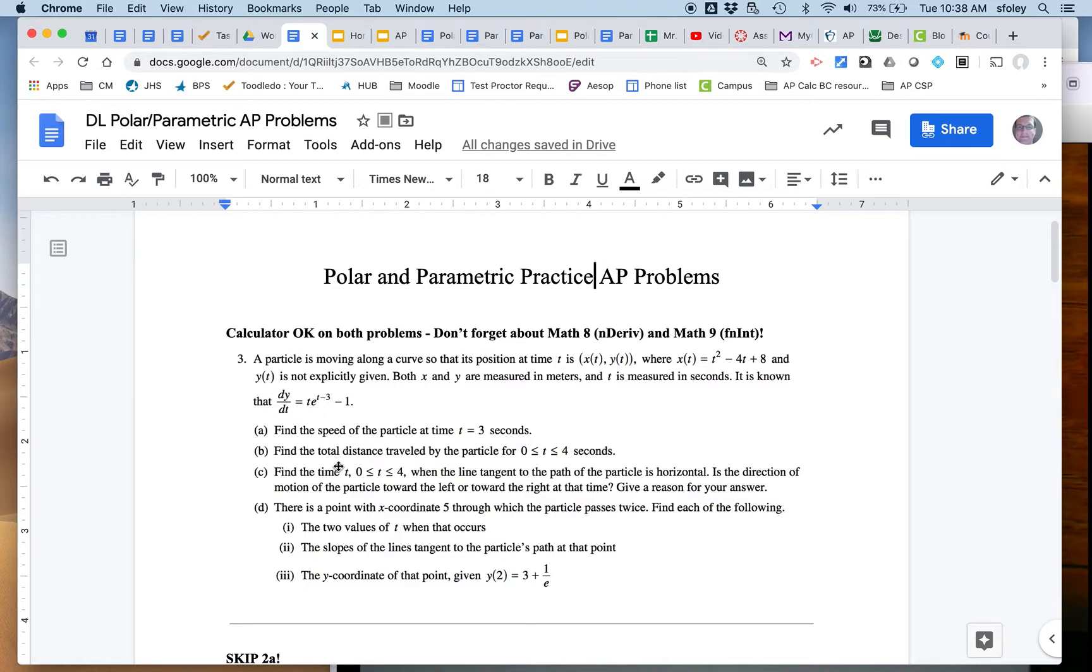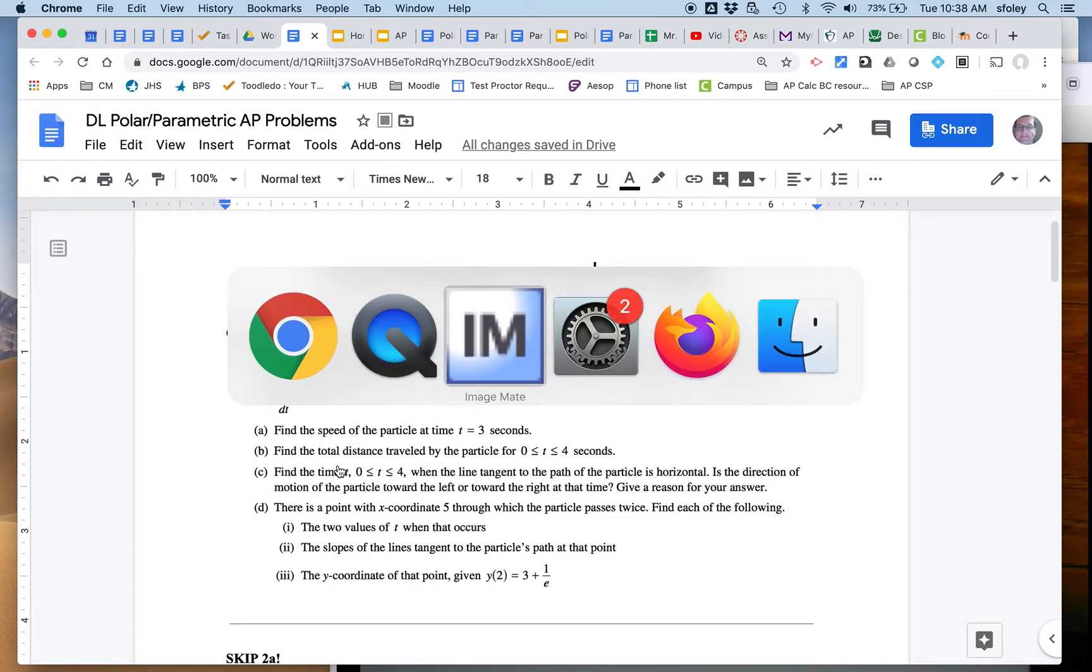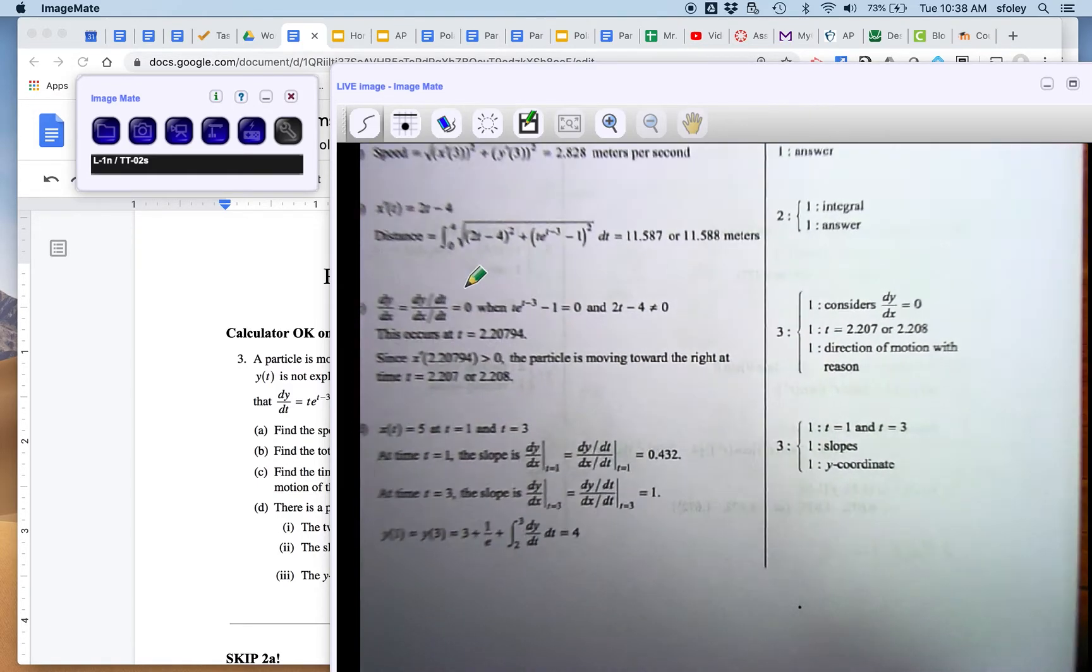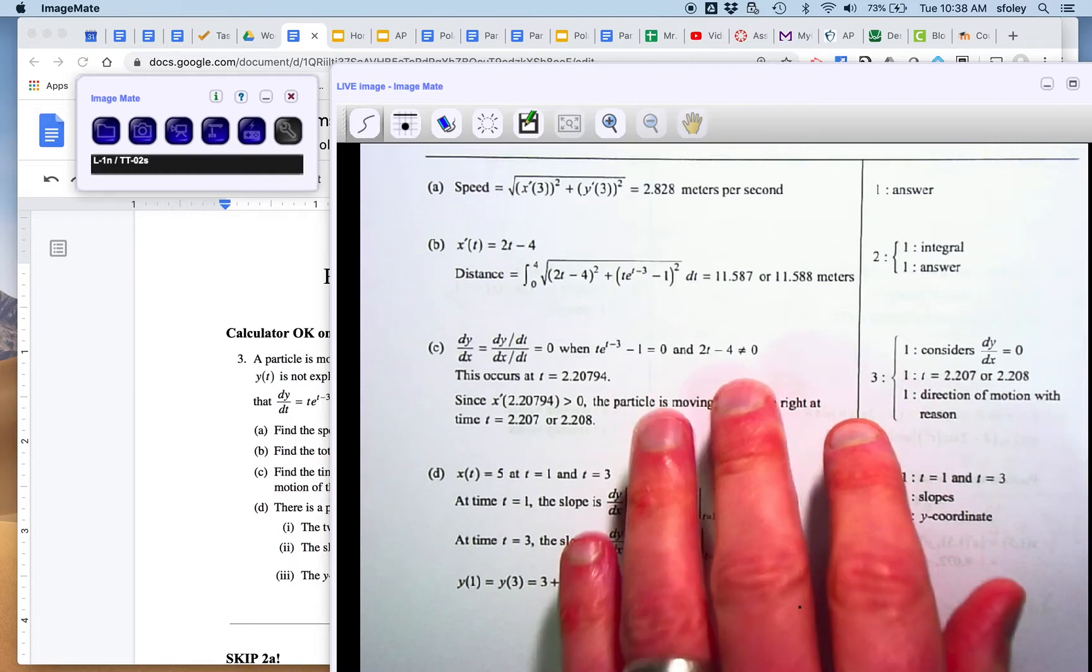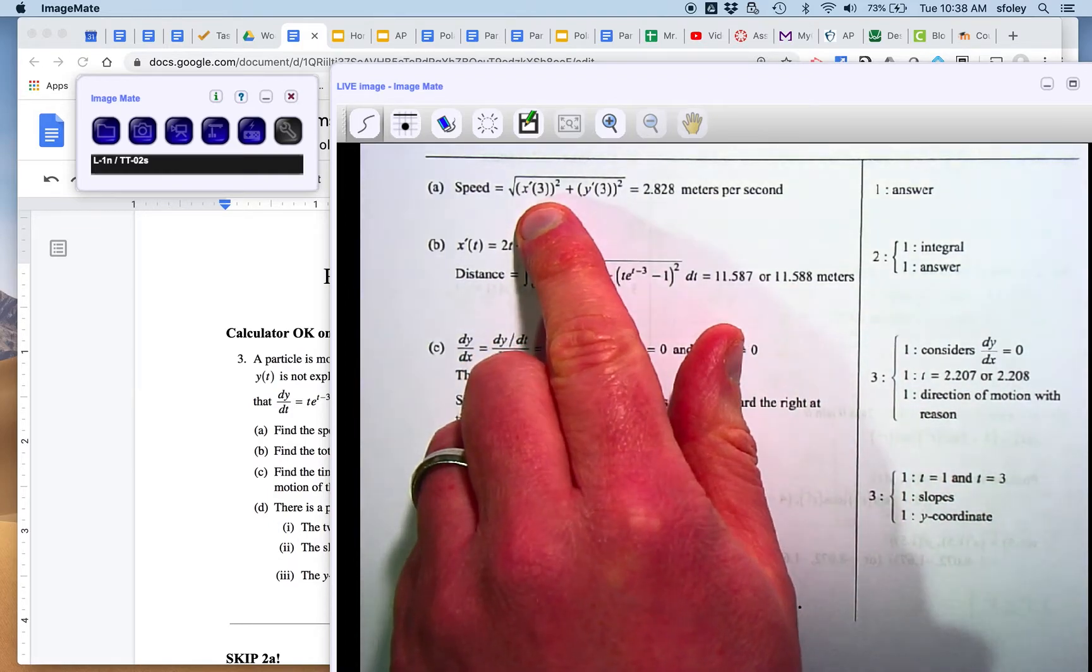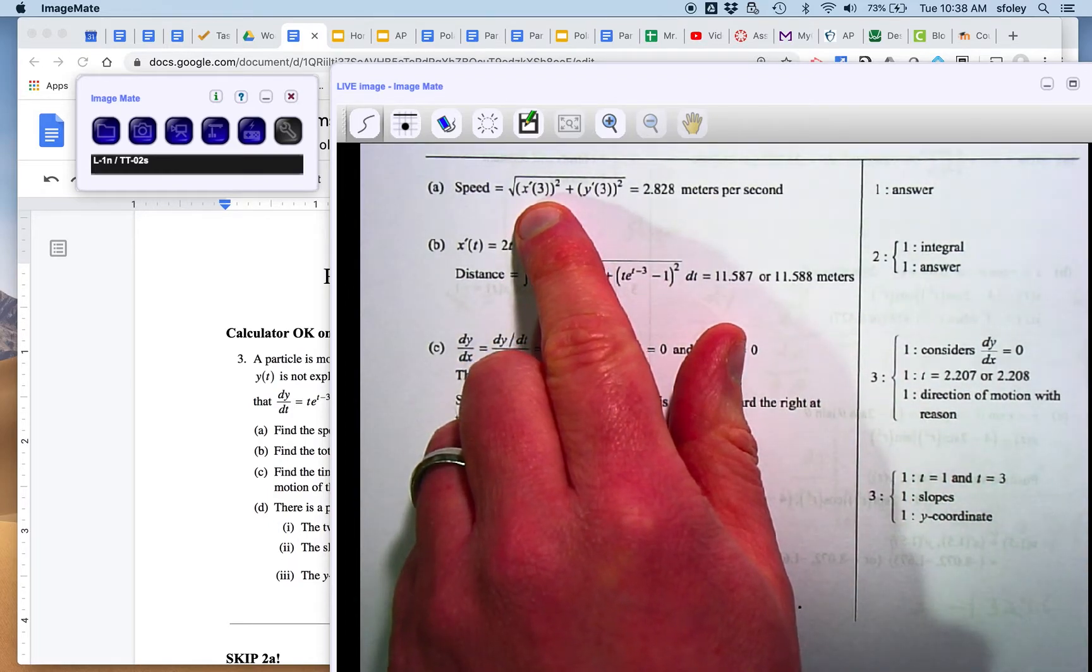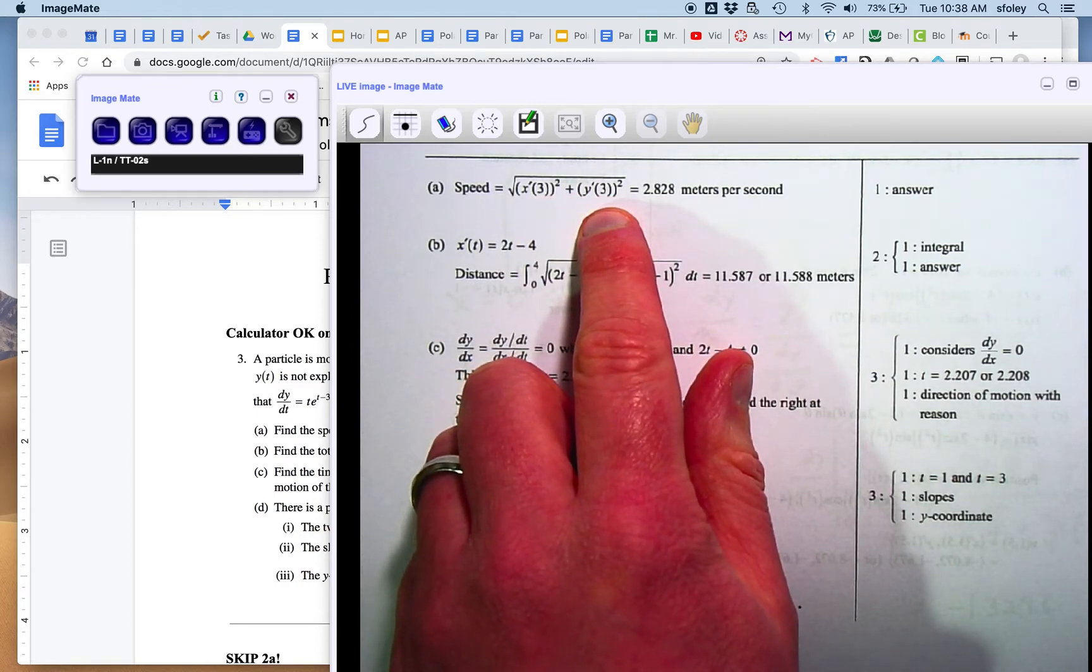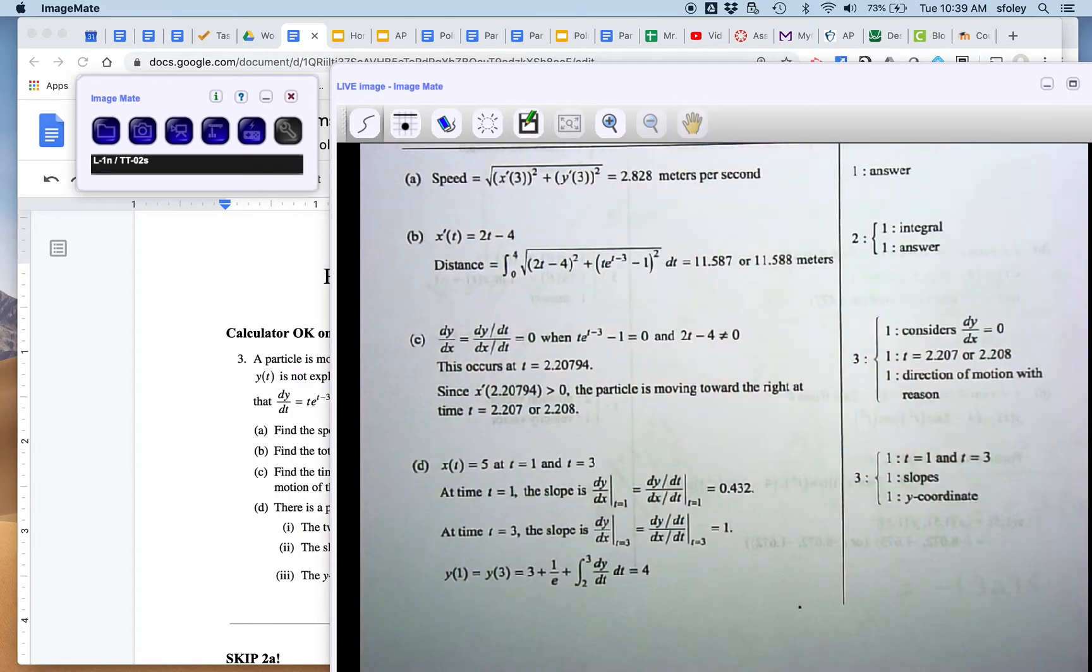Find the speed of the particle at time three, so that's the length of the velocity vector. And so again, and the answers are linked online, you want to be careful. They gave you the equation for x, so you have to take the derivative of that and plug in three. They gave you the equation for y prime, so you simply plug three into that equation that they gave you, and then do the Pythagorean theorem.